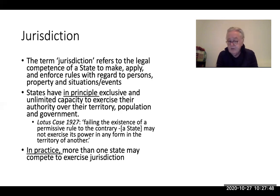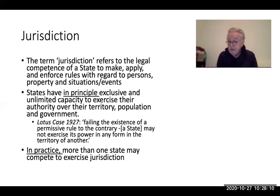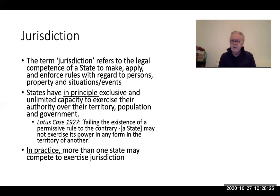The Lotus case says that failing the existence of a permissive rule to the contrary, a state may not exercise its power in any form in the territory of another. This wasn't a case of exercising jurisdiction in the territory of another, but it was a recognition that Turkey, in the absence of a rule prohibiting it from exercising jurisdiction on the high seas — or exercising jurisdiction because Turks were victims of the crime on the high seas — had that right upheld by the court. So it sets out some principles, but also shows the controversy associated with this.